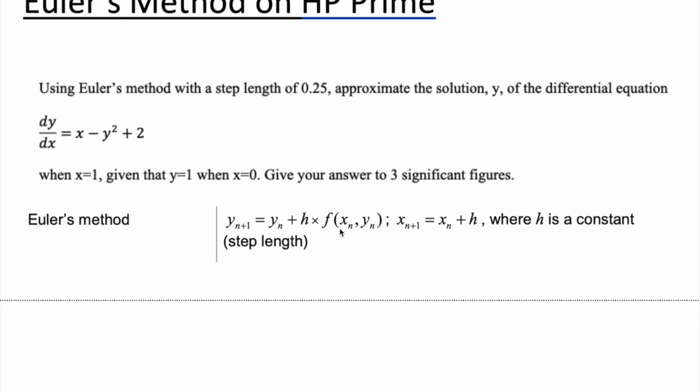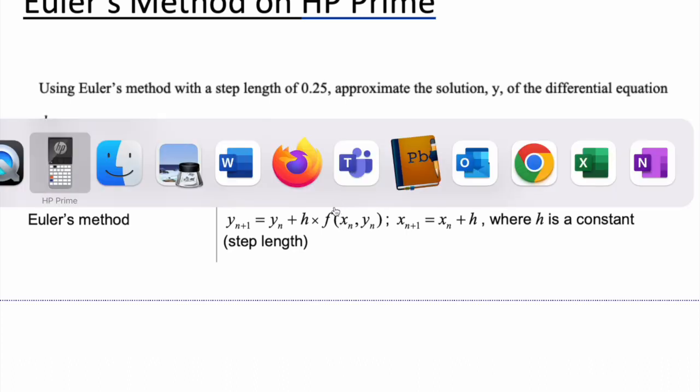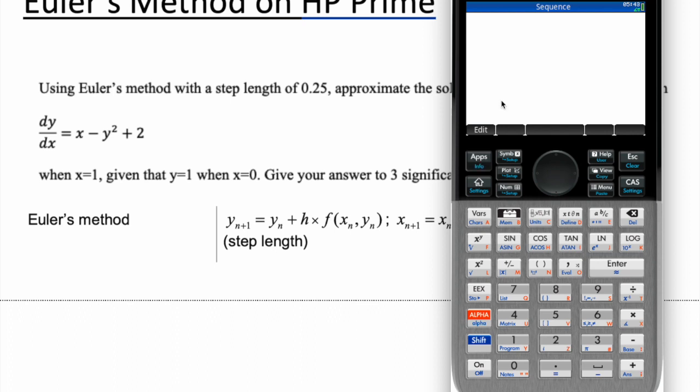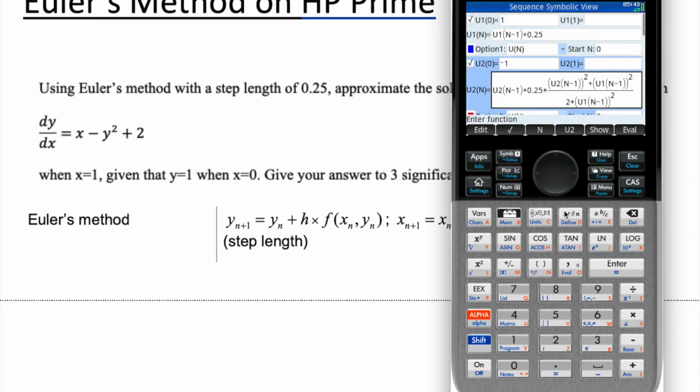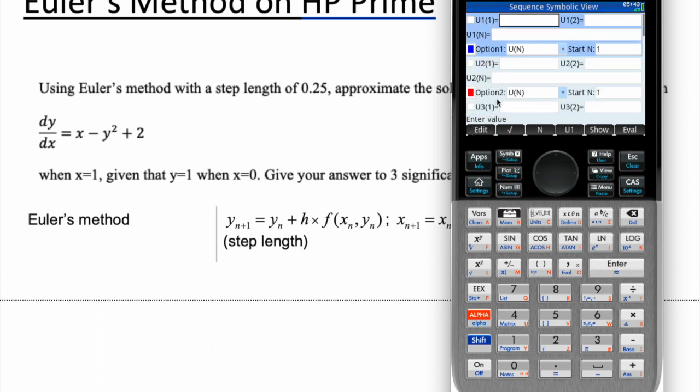So we're going to convert that now into the notation of the calculator. So we're going to go to apps and click on sequence. And if we've got something in there, I'm going to just clear that. So let's start with u1. So u1 and u2, that's going to be your x and your y.